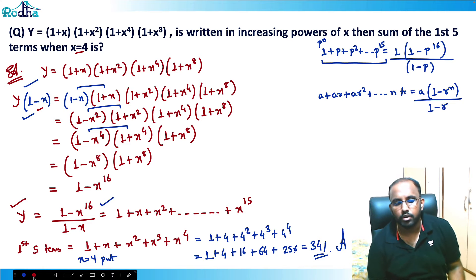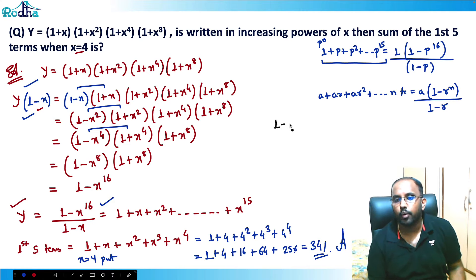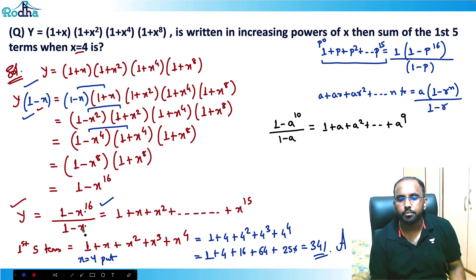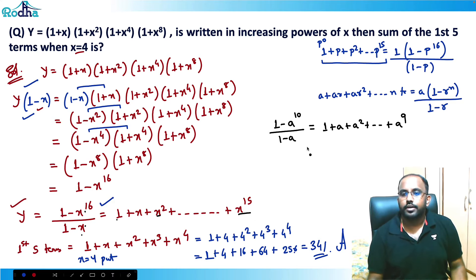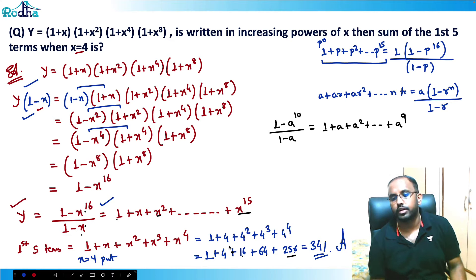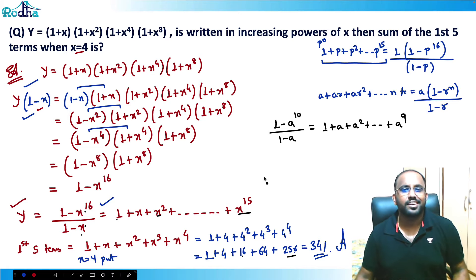The key insight is: whenever you see an expression like (1 - a¹⁰) / (1 - a), recognize it directly as 1 + a + a² + ... + a⁹. So (1 - x¹⁶) / (1 - x) = 1 + x + x² + ... + x¹⁵. The final answer is 341. Hope all of you got this — thank you!